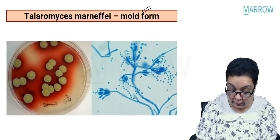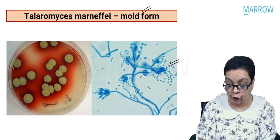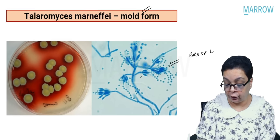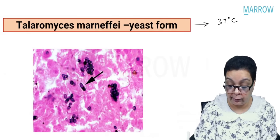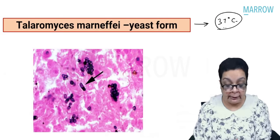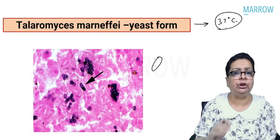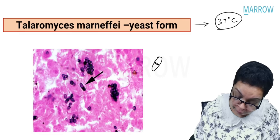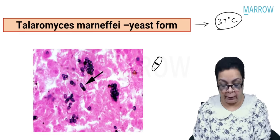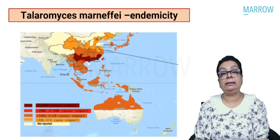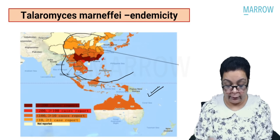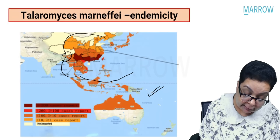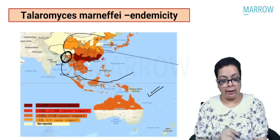On lactophenol cotton blue mount, hyaline septate hyphae and brush-like conidiophores are seen. At 37°C in tissue specimens, ellipsoidal yeast cells dividing by formation of transverse septae are seen — not by budding. Talaromyces marneffei, earlier called Penicillium marneffei, is mainly reported from Southeast Asian countries including Northeastern India.